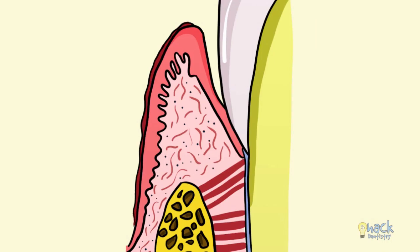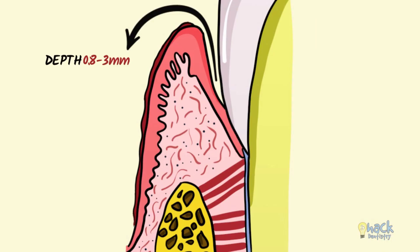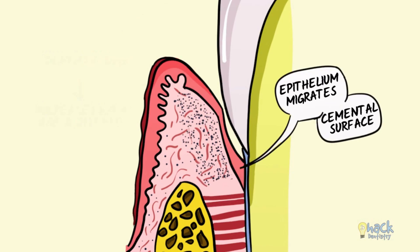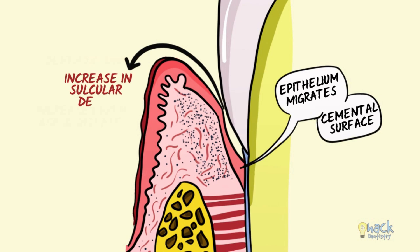The sulcular depth ranges from 0.8 to 3 mm, and this depth can increase with age or disease. Chronic inflammation as a result of either disease or aging could result in migration of the junctional epithelium to the cemental surface, increasing the sulcular depth and resulting in a periodontal pocket.